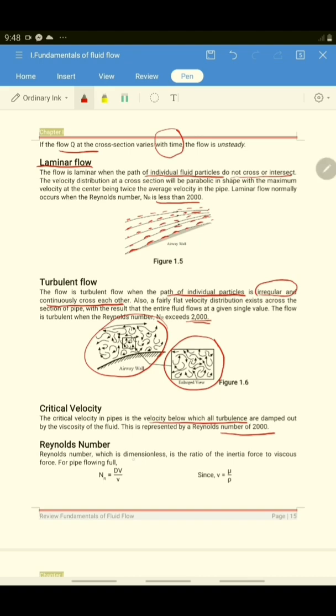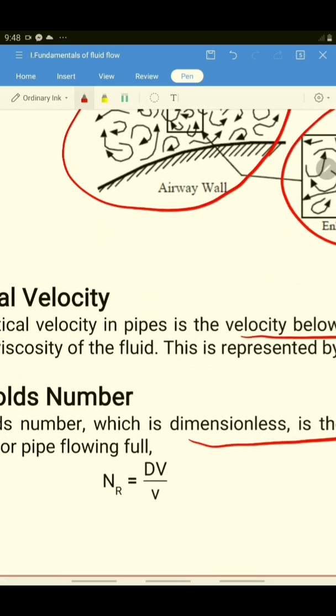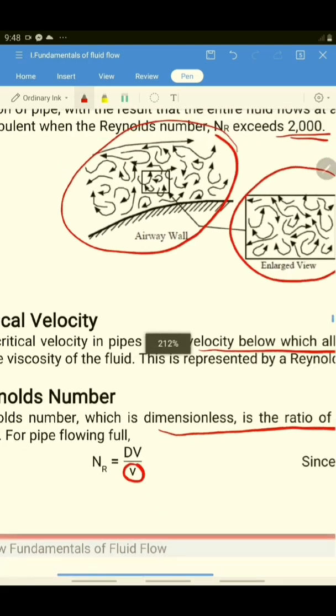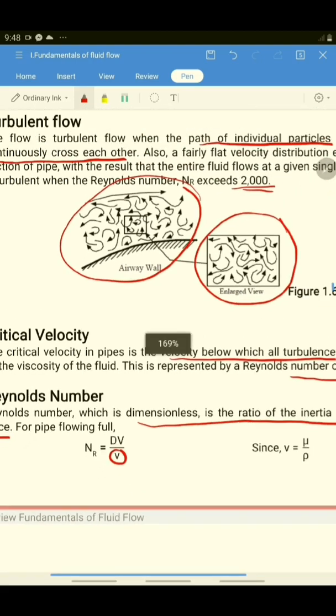So what do you mean by the Reynolds number? It is a dimensionless ratio of the inertia force to viscous force. So you have here, Nr is equal to dv over,